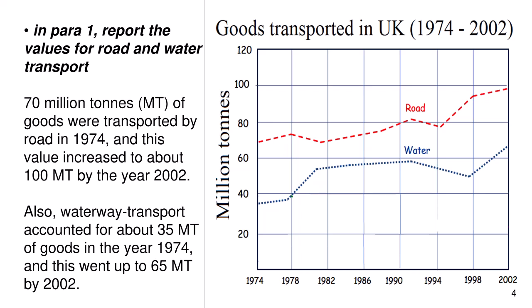In paragraph 1, report the values for road and water transport. 70 million tons or MT of goods were transported by road in 1974 and this value increased to about 100 MT by the year 2002. Also, water transport accounted for about 35 MT of goods in 1974 and this went up to 65 MT by 2002.